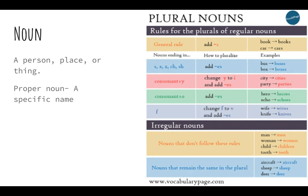A proper noun is a specific name — Miss Moore, Marion Elementary School, Marion, North Carolina. All of those are proper nouns. They have a specific name, and you make sure that they are capitalized when you write them. The first letter should be capital.